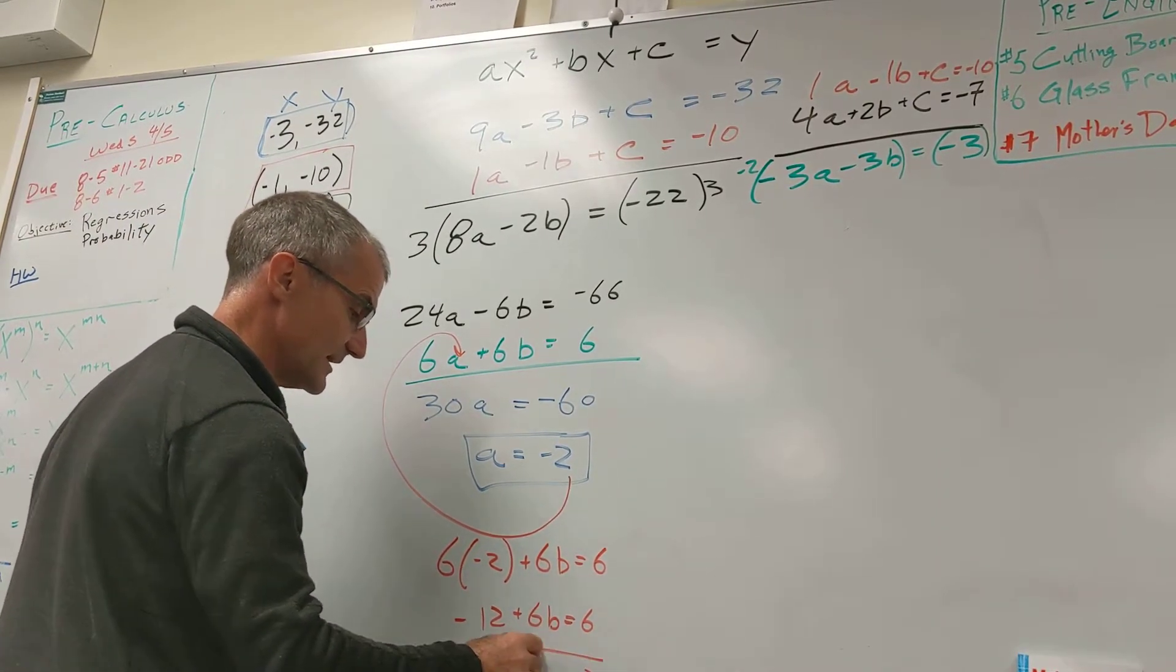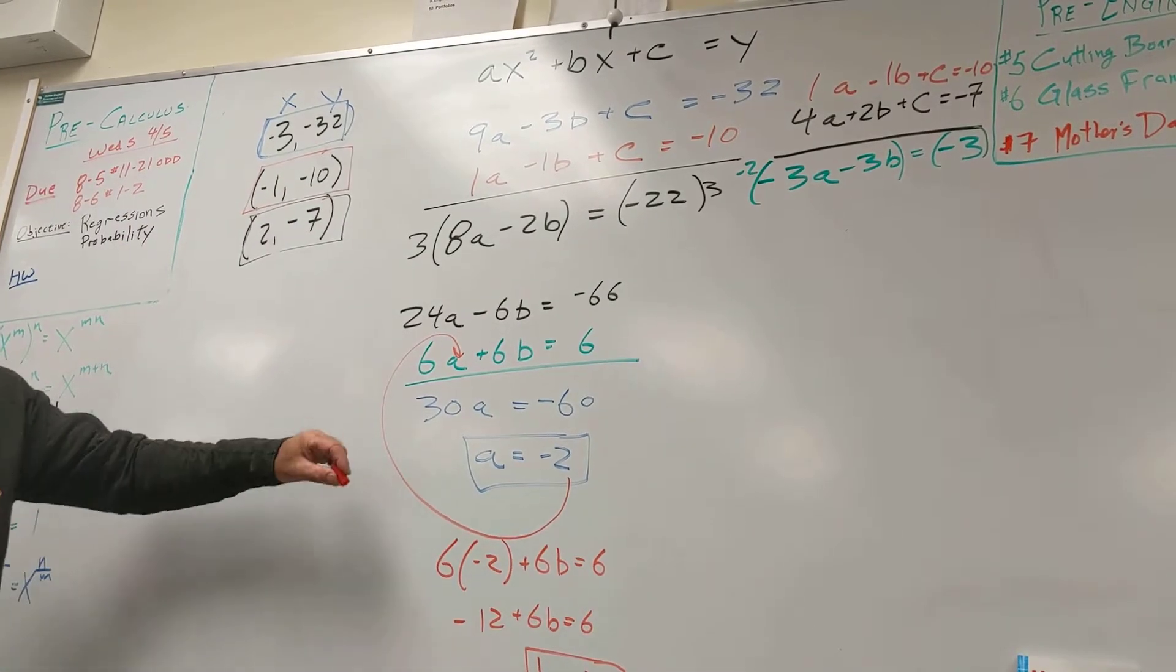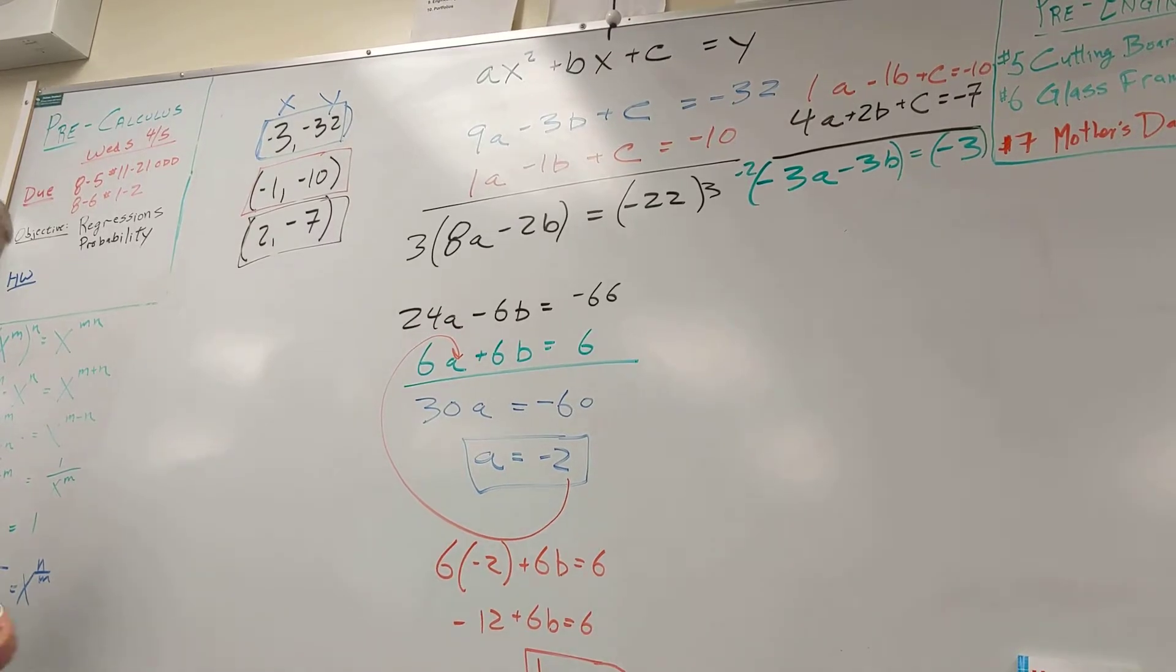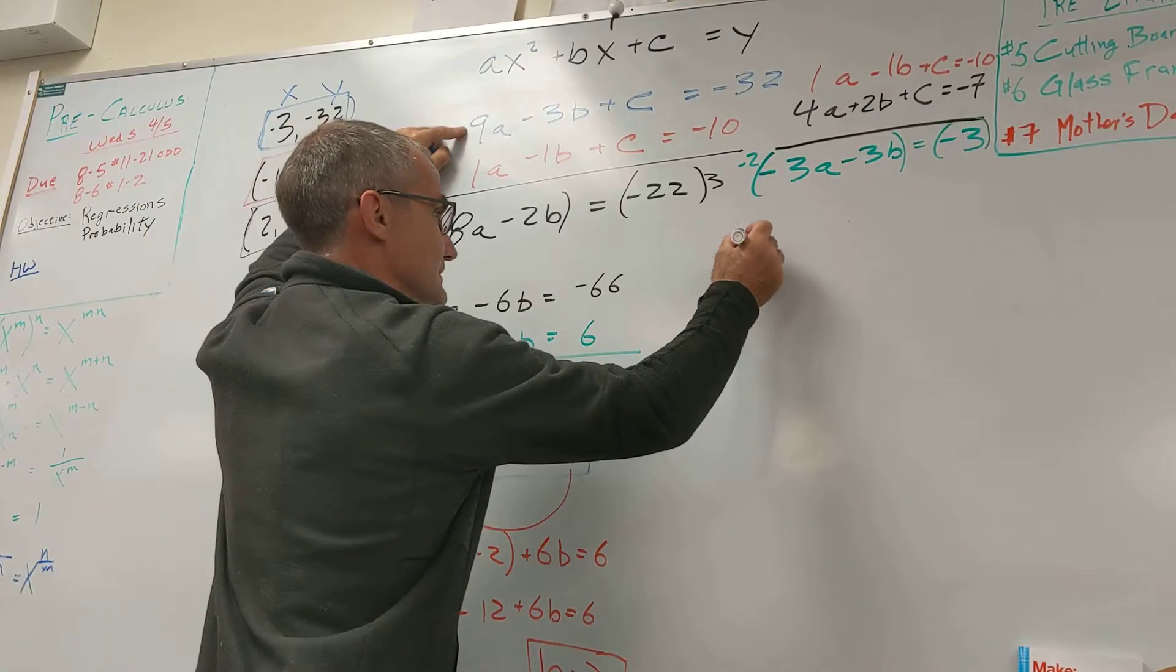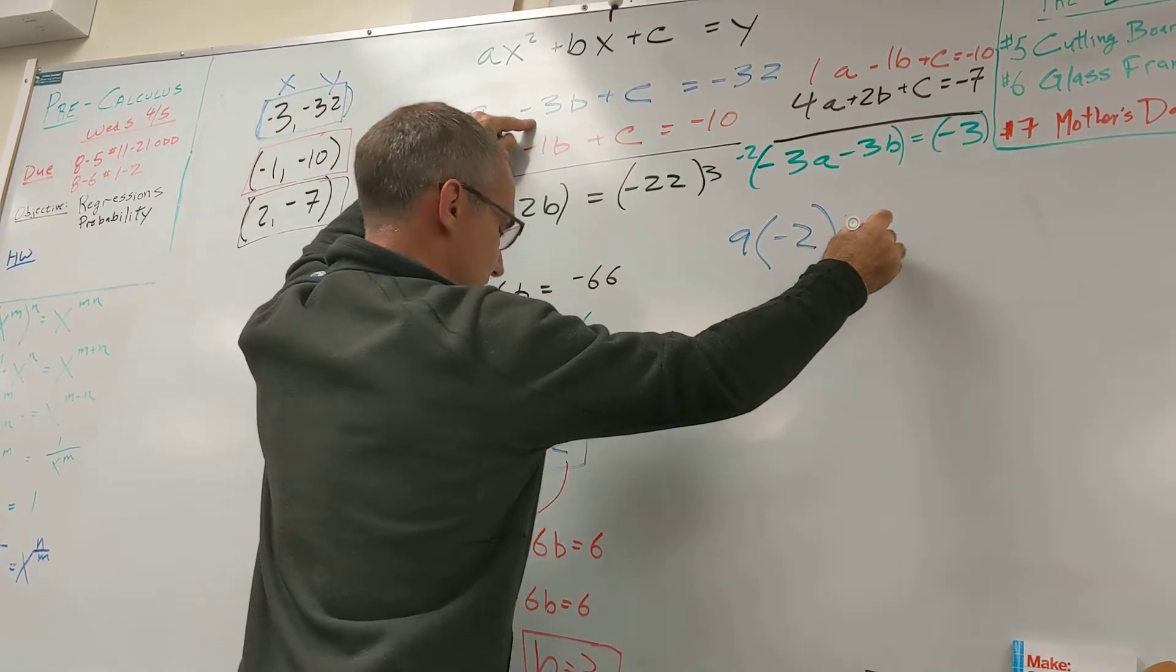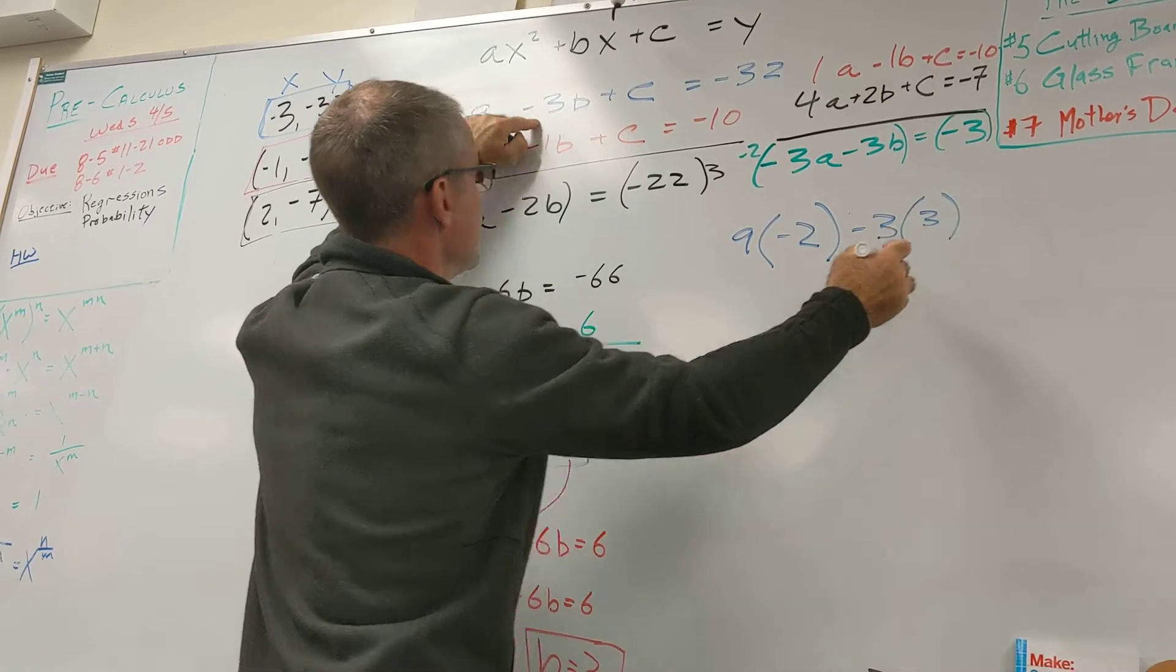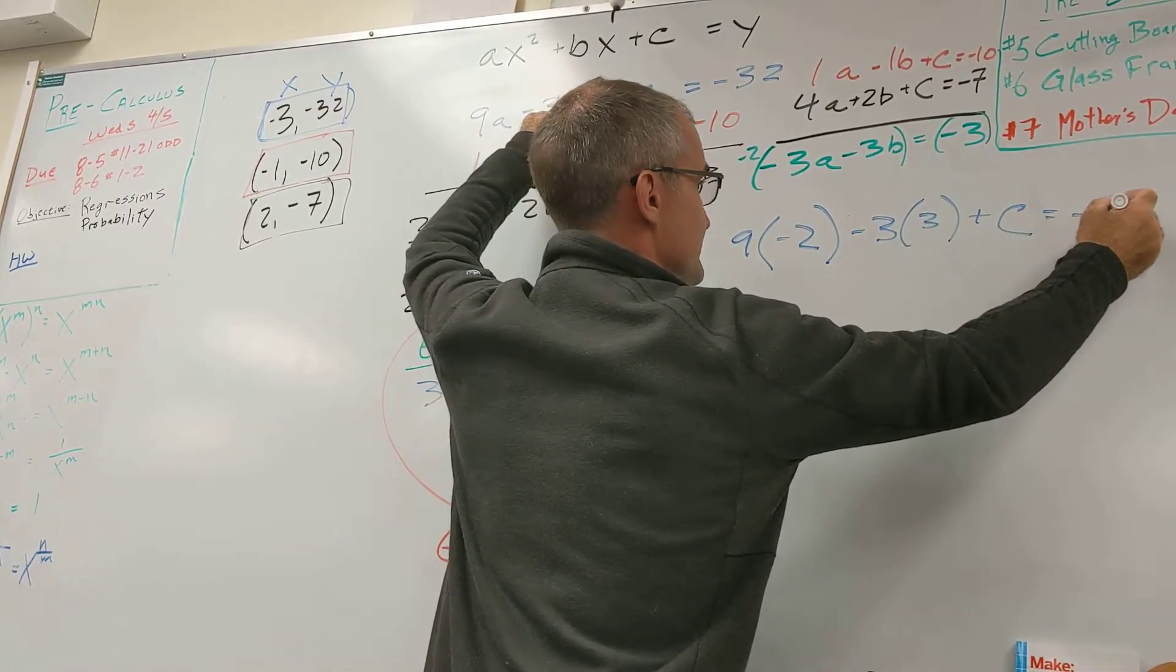A value for a, value for b. Now I'm going to take both a and b and plug it into any of the original equations. I think I'll take this first blue one right here. So I have 9 times my value of a, negative 2, minus 3, times my value of b, 3, plus c, equals negative 32.